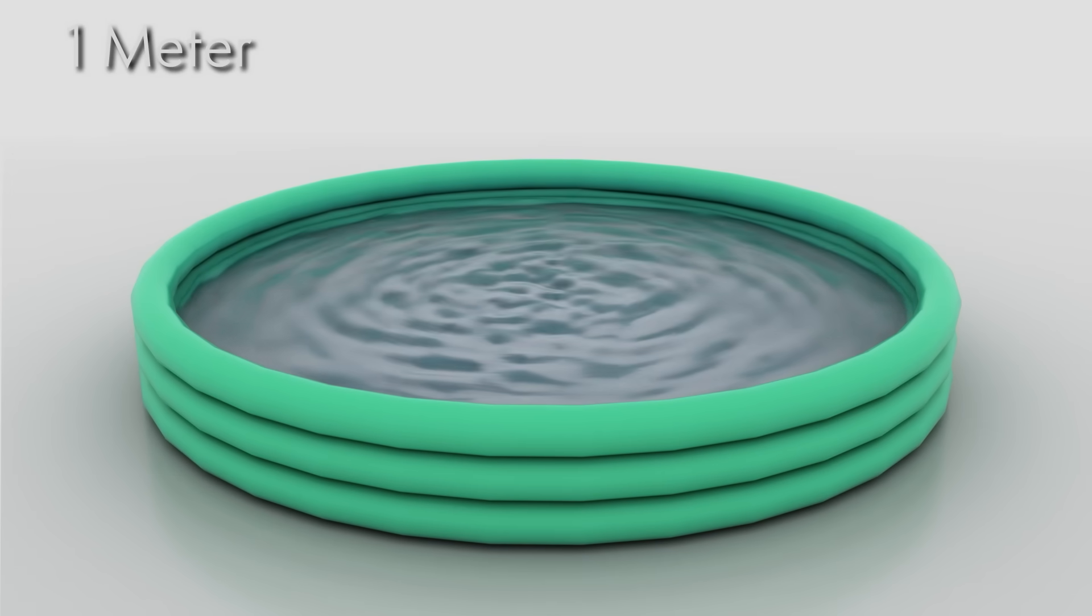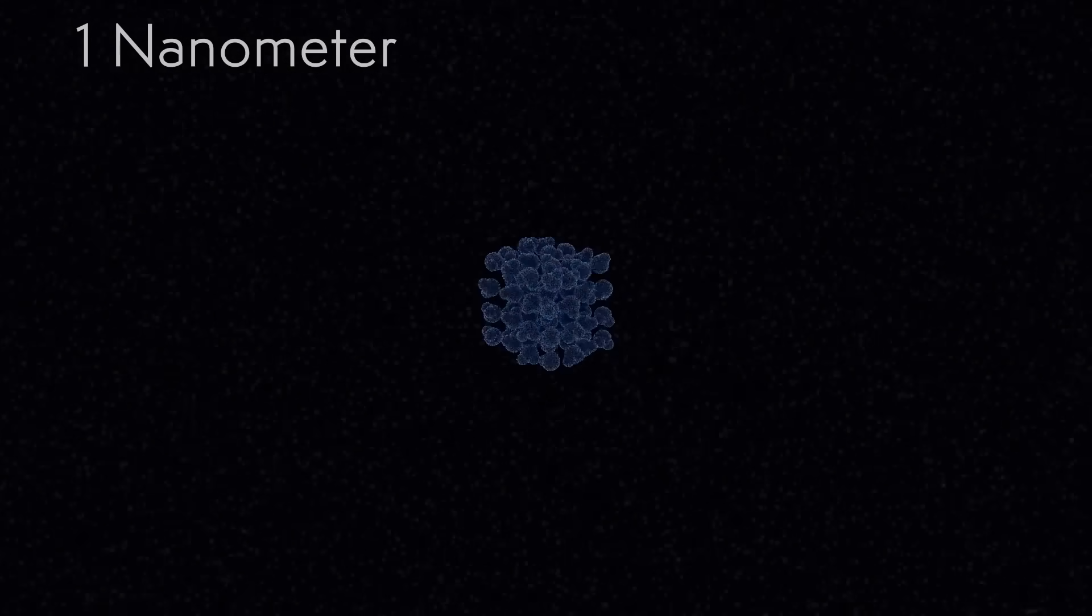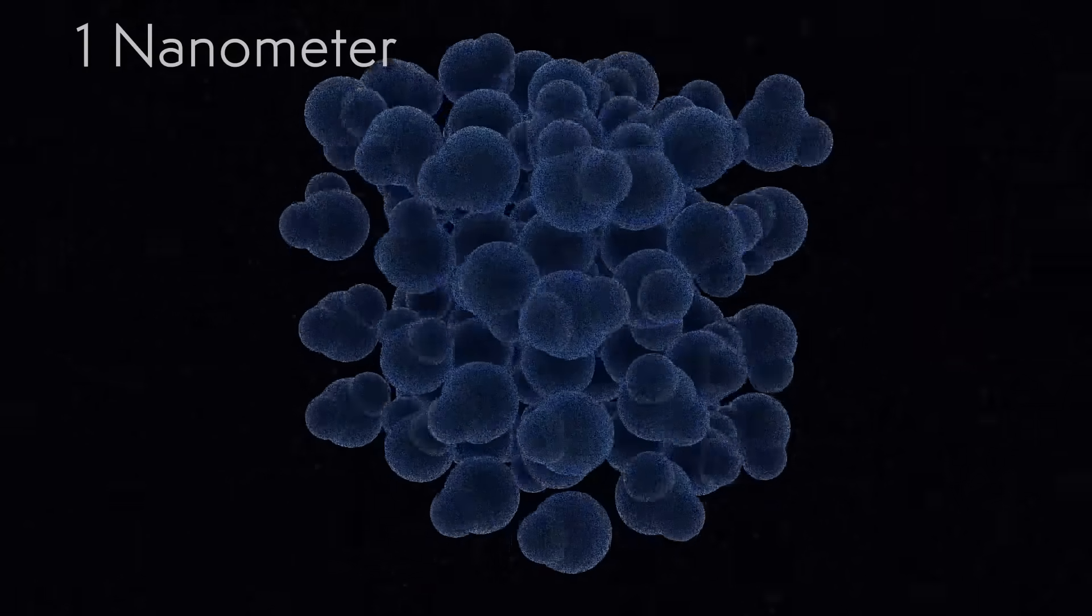Diving into its water, three orders of magnitude in, we reach a cube of water with a scale of one millimeter. Three more orders of magnitude in, we reach a scale of one micrometer. When we reach the scale of one nanometer, we start to see the motion of the water molecules.